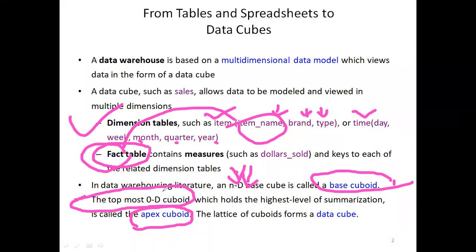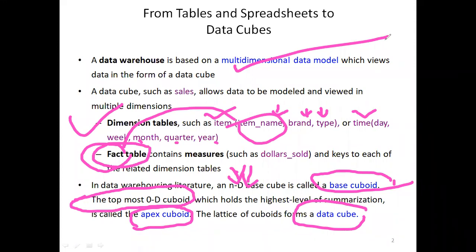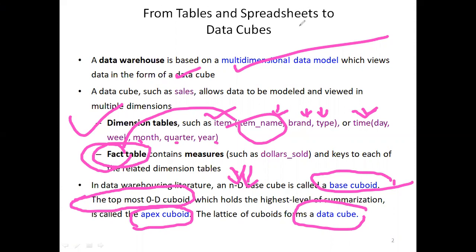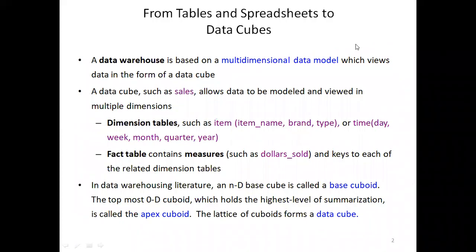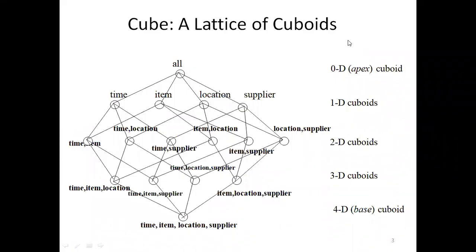The lattice of cuboids forms a data cube. So to recap the technical terms: we have the multi-dimensional data model, examples of data cubes like sales with item, time dimensions, the fact table, the base cuboid, the apex cuboid, and the lattice of cuboids. Let's move ahead and look at this figure very carefully.